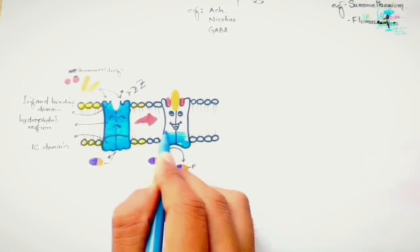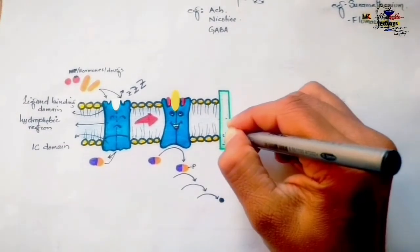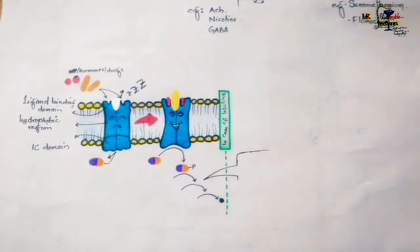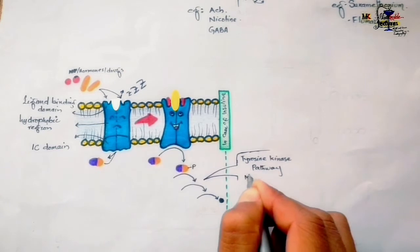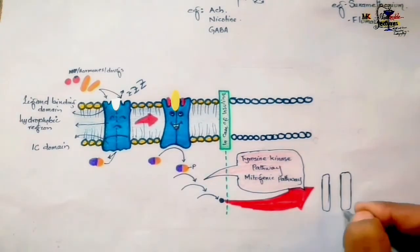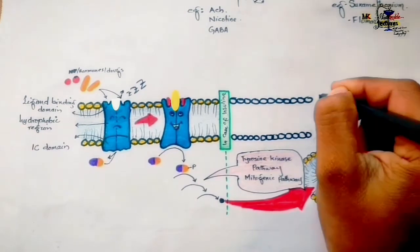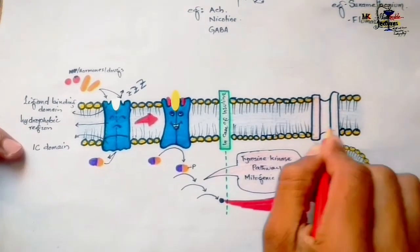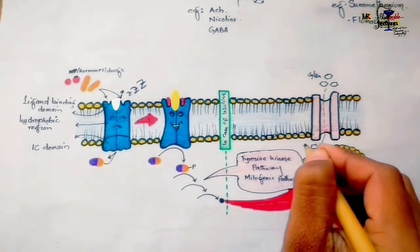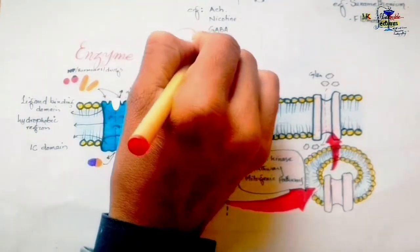The cascade of reactions eventually produces a response. The best example is insulin, which activates the tyrosine kinase pathway and mitogenic pathway inside the cell, resulting in the translocation of glucose transporters from the cytosol to the cell membrane. These transporters are responsible for transporting glucose molecules from the extracellular fluid to the intracellular fluid, to be utilized as an energy source inside the cell.